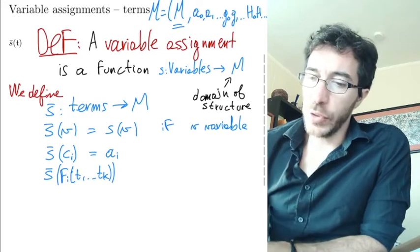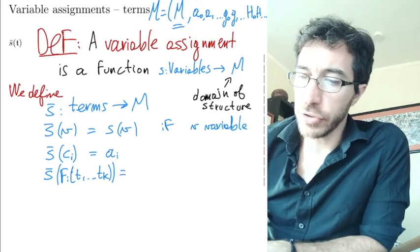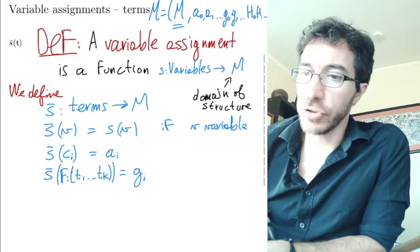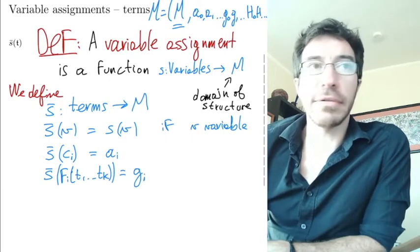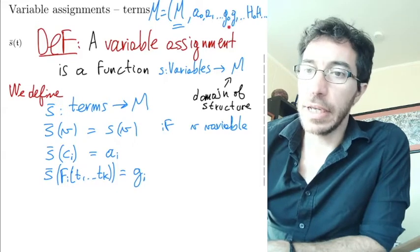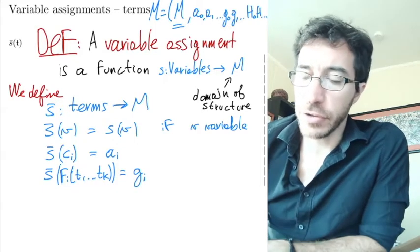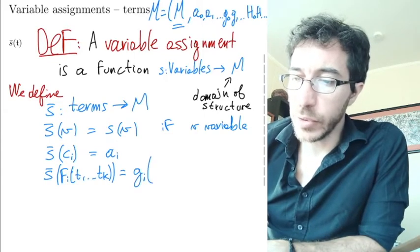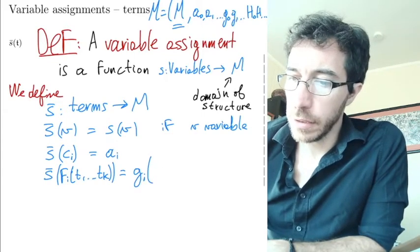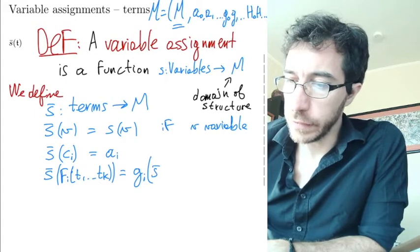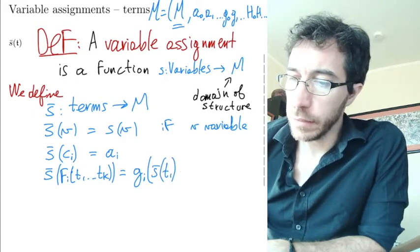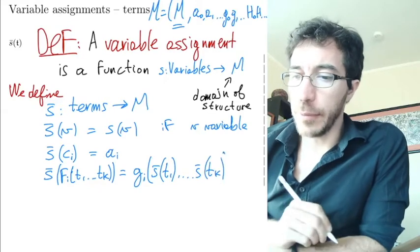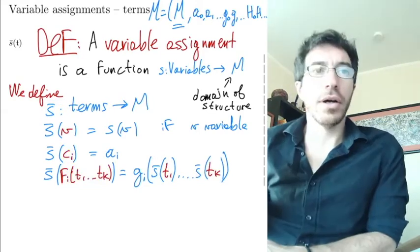So essentially we're going to get the interpretation of this function symbol f1, and that was the g function right there. That's the interpretation of f. And now this is a function. Now it's a function and we can apply it to elements of M, and what elements we apply to, we apply it to s bar of t1 comma s bar of tk. So we have k elements and we apply it to them.